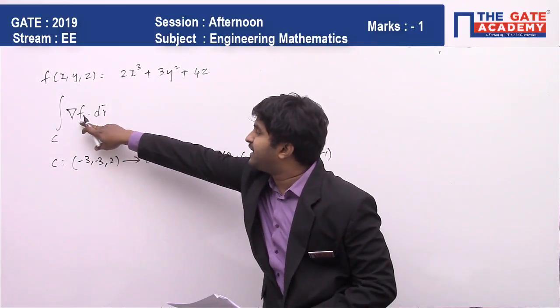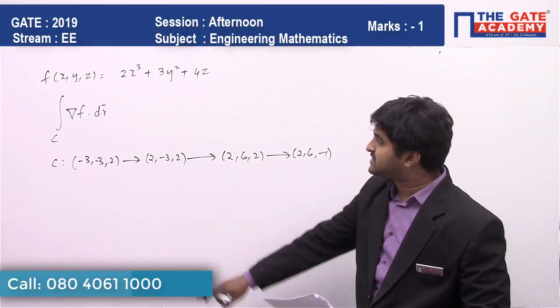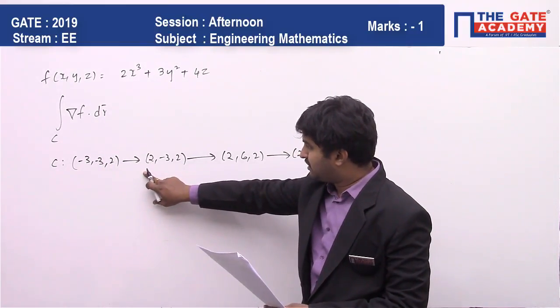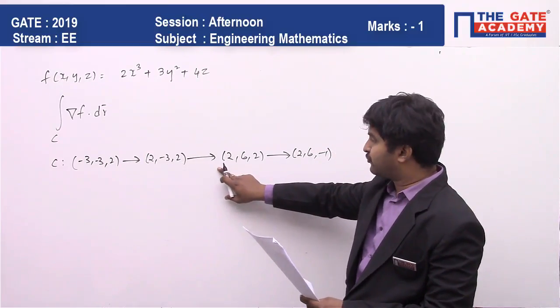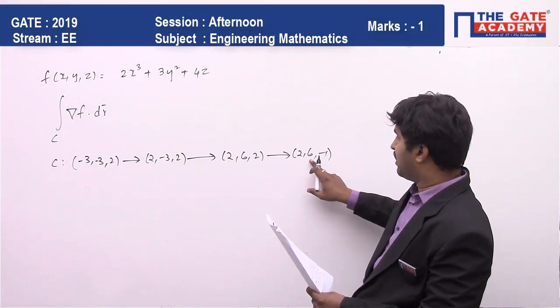The integral of the gradient of f dot dr over the curve formed with segments (-3, -3, 2) to the point (2, -3, 2), and from there to (2, 6, 2), and from there to (2, 6, -1).